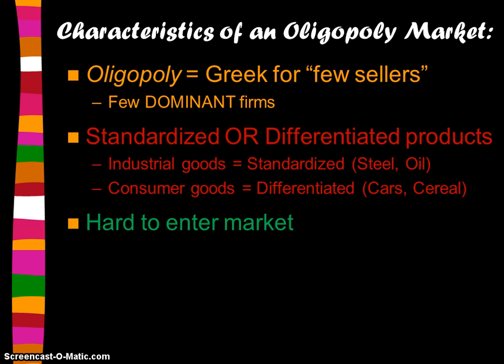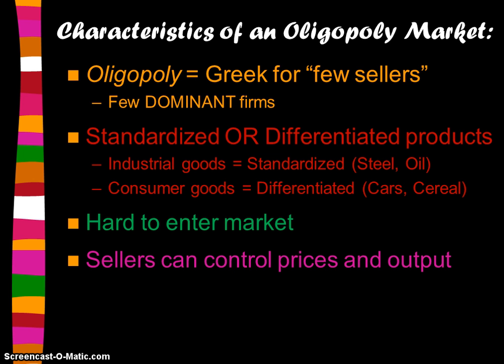In oligopoly, there are high barriers to entry, which makes it very hard to enter the market. Because of this, the sellers have a lot of market power, because they can keep other companies from coming in and making a difference. Sellers have the ability to control prices and output, and oftentimes they operate with a price leadership system, where one firm changes its prices and the others follow.